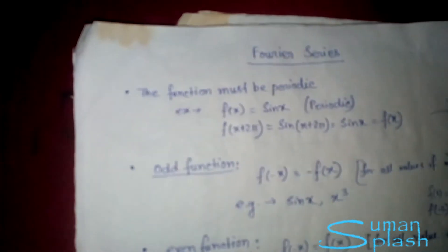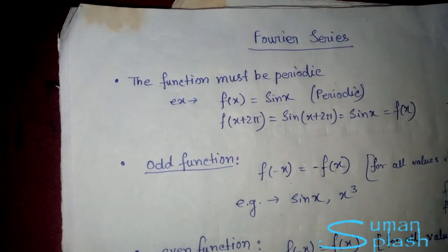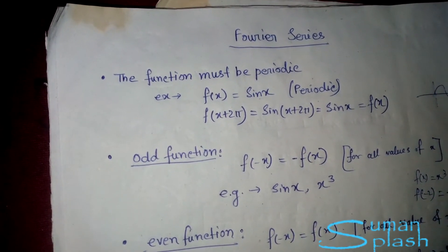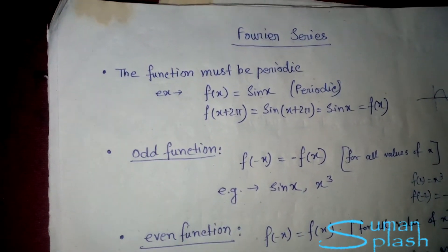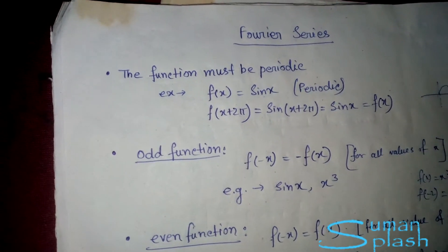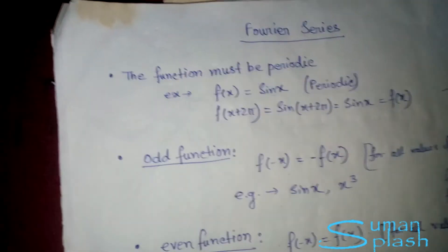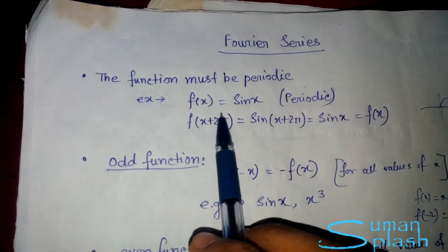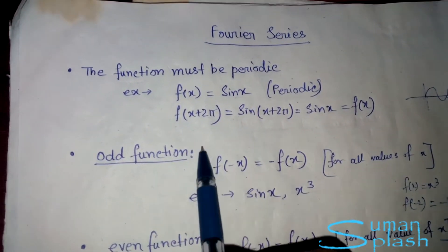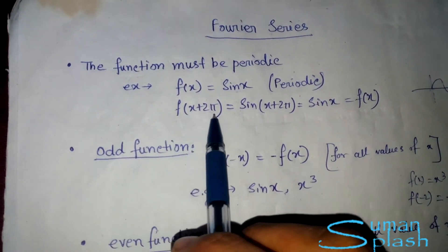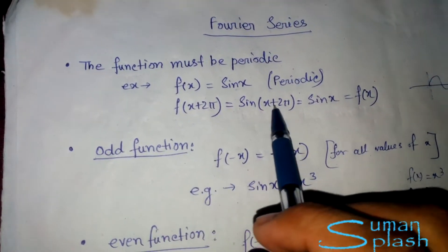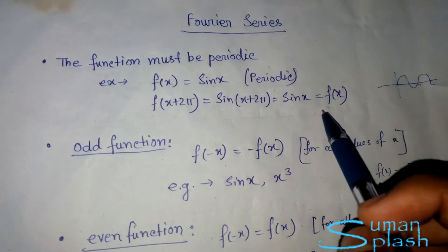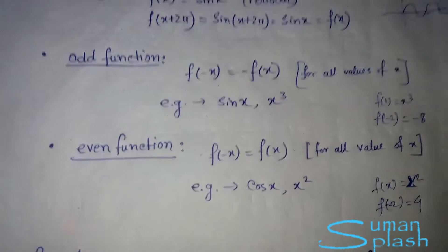Today my topic is Fourier series. For Fourier series, a function f(x) is said to be periodic if there exists a positive number t such that f(x + t) equals f(x) for all values of x. For example, if f(x) = sin(x), then f(x + 2π) = sin(x + 2π) = sin(x), which equals f(x).